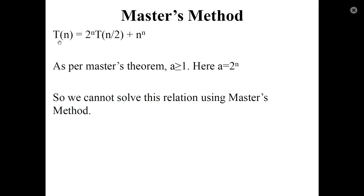Next question: T(n) = 2ⁿ · T(n/2) + nⁿ. As per the Master's theorem, a must be greater than or equal to 1 and must be a constant. In our case, a = 2ⁿ, which is not a constant. So we cannot solve this recurrence relation using the Master's method.